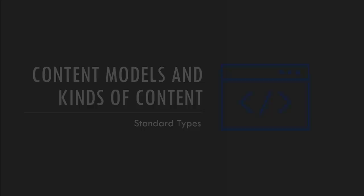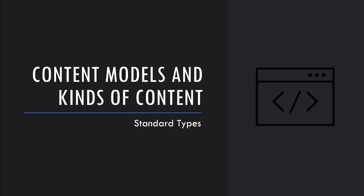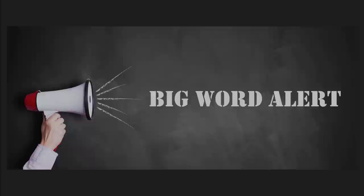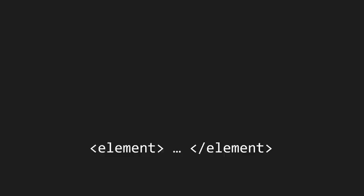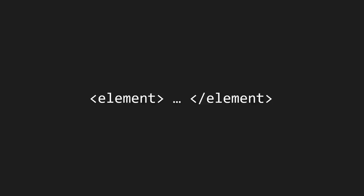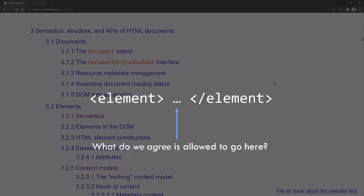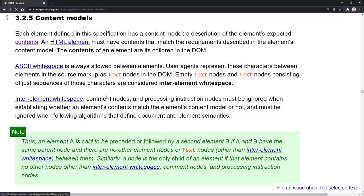Let's talk about content models and kinds of content. Big Word Alert: a content model is a description of the element's intended contents. In other words, when you're looking at an element, the content model is what the specification says is allowed to go in there. You can't just put any element inside - the specification details what can go inside each element. The content model.